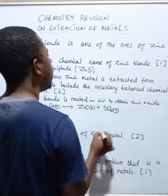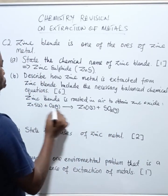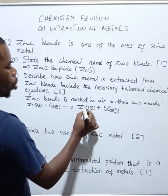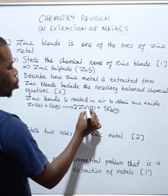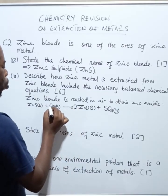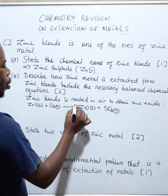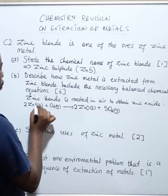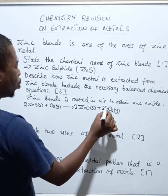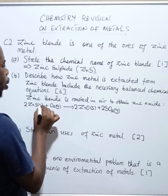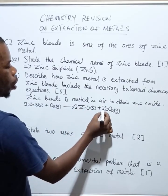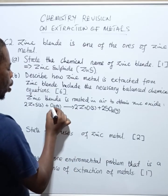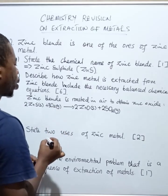Now remember they want a balanced chemical equation. Zinc is 1, sulfide is 1, oxygen is 2 on the left side. We need to balance it: adding a 2 in front of ZnS makes zinc 2 and sulfur 2, so we add 2 in front of ZnO and 2 in front of SO₂. Oxygen on the right becomes 2 plus 4 equals 6, so we add a 3 in front of O₂ to give 6 oxygen on the left. The balanced equation is: 2ZnS + 3O₂ → 2ZnO + 2SO₂.